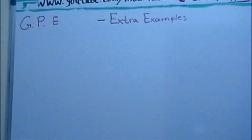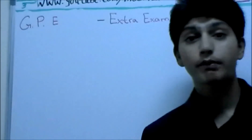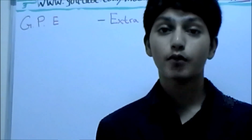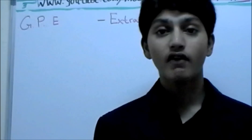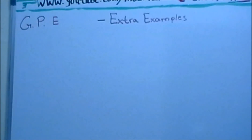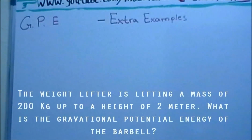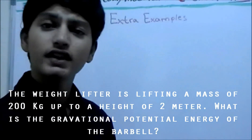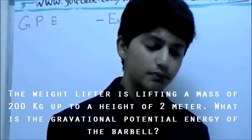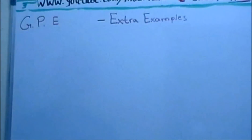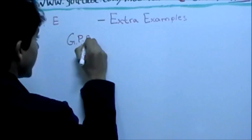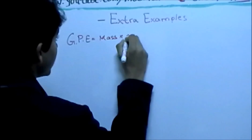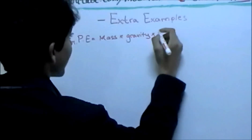So let's go ahead and solve some examples. Here I'll be showing you a picture of a weightlifter lifting a barbell that is not moving at all, and we need to calculate the gravitational potential energy of the barbell. The question says that a weightlifter is lifting a mass of 200 kg up to a height of 2 meters. What is the gravitational potential energy of the barbell? So we can say that gravitational potential energy is equal to mass times gravity, because it's acting on us, times the height.